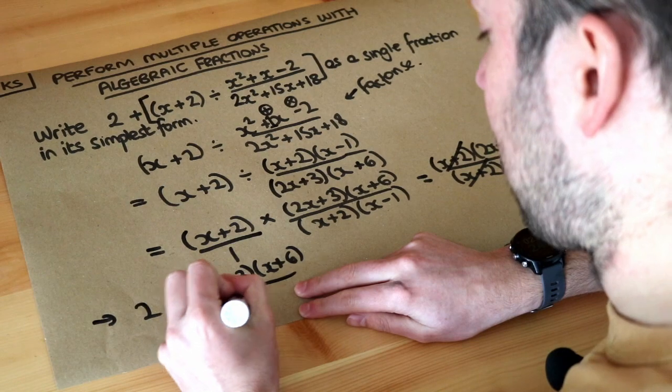So now we're just left with 2x plus 3 times x plus 6 over x minus 1. So going back to the original question, we have 2 plus this thing here. So we have 2 plus this thing here, and the x minus 1. I don't need the brackets around the x minus 1 because there's nothing around it.